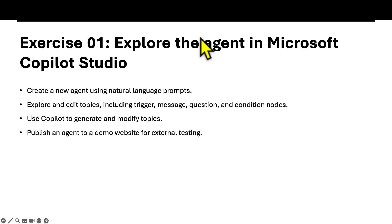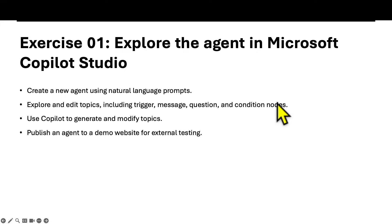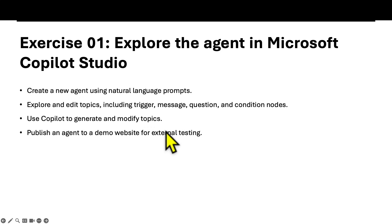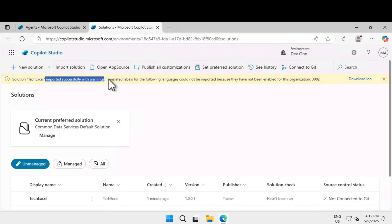The status has changed — the solution was imported successfully with some warnings. The warnings are about translated labels for some languages that could not be imported, which is fine. You can download the log to validate if you prefer. Now we are going to explore the agent in Microsoft Copilot Studio. We'll create a new agent using a natural language prompt, then learn about topics — triggers, messages, questions, and conditions — then use Copilot to generate and modify topics, and finally publish the agent to a demo website for external testing.